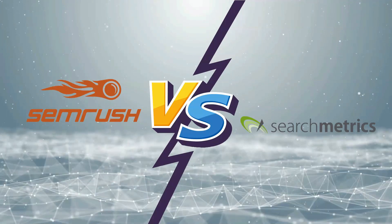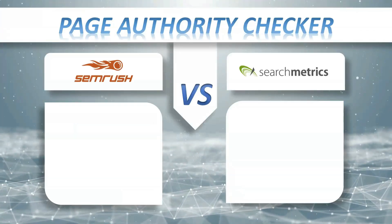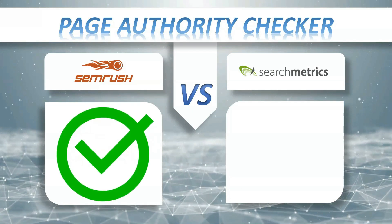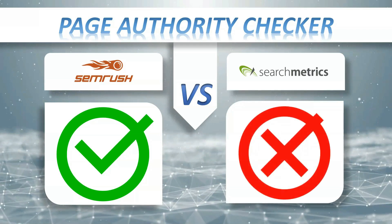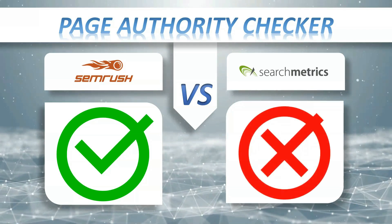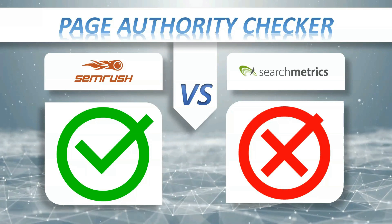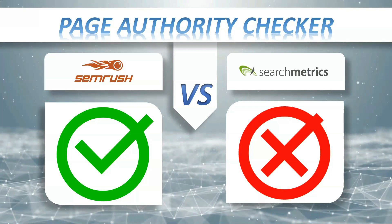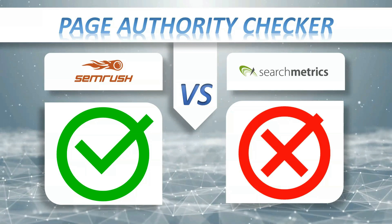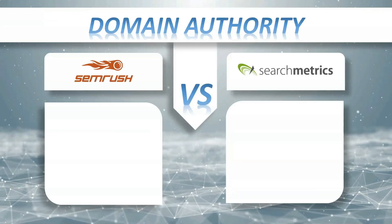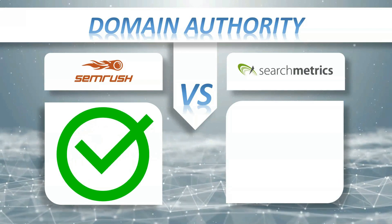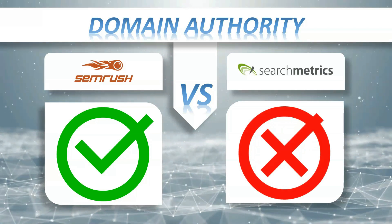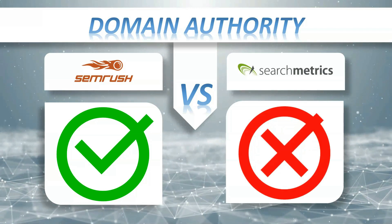Page Authority: SEMrush yes, Search Matrix Essentials no. Page Authority is a metric developed by professionals to predict the ability for a specific page to rank in search engines. Page Authority uses a zero to one hundred logarithmic scale. A high Page Authority score means your page has the potential to rank well in search engine results.